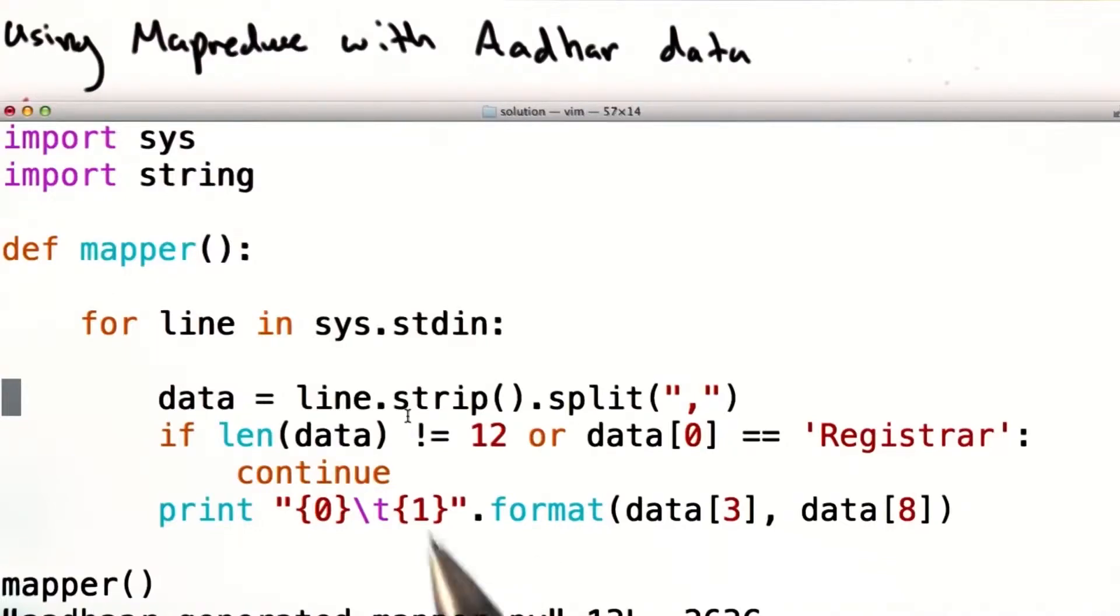Let's walk through the code you wrote to complete the mapper function. First, we create an array, data, which splits each row of data on the comma.